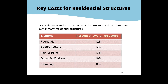This slide gives a quick indication of when you may be looking at a substantial damage determination. There are five key elements of a structure that make up about 60% of the structure's value — foundation, superstructure, interior, doors/windows, and plumbing. If you see a lot of damage to these five items, chances are you'll end up with a substantial damage determination. This is a quick guide for an initial assessment, though you still need to go through the full determination process.